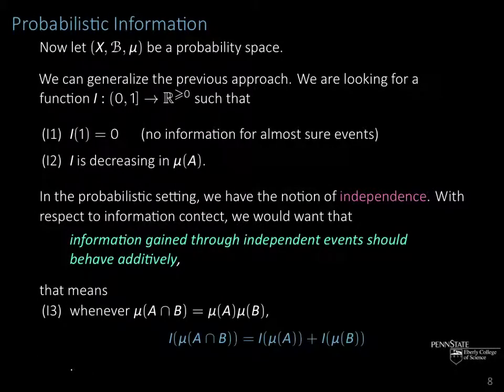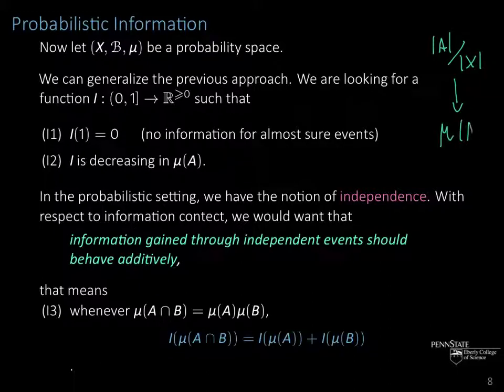We can now generalize to the probabilistic setting. Let (X, B, μ) be a probability space, not necessarily finite anymore. We generalize the previous approach as follows: cardinality is now replaced by the measure of A. You should think of the function I as I(μ(A)).